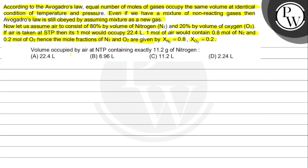Hence the mole fractions of N2 and O2 are given by X_N2 = 0.8 and X_O2 = 0.2. The question asks: volume occupied by air at NTP containing exactly 11.2 grams of nitrogen. Options are: A) 22.4 liter, B) 8.96 liter, C) 11.2 liter, and D) 2.2 liter.